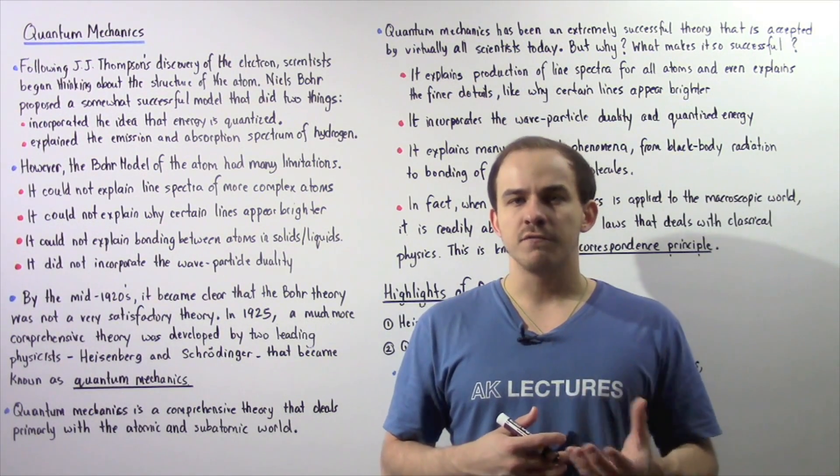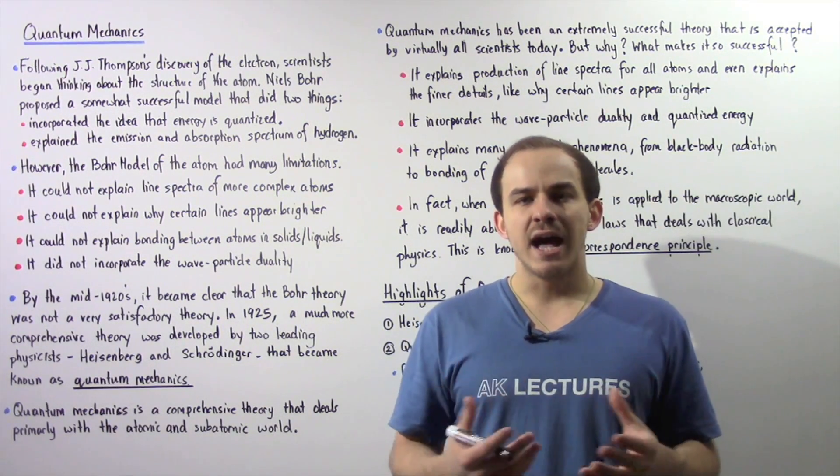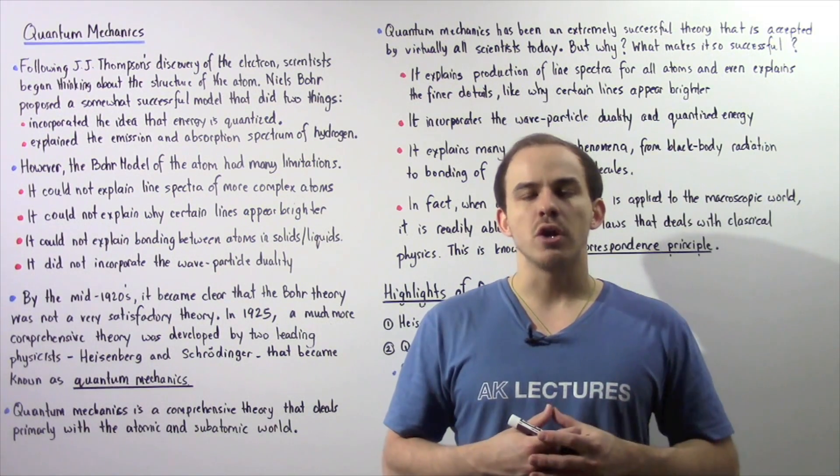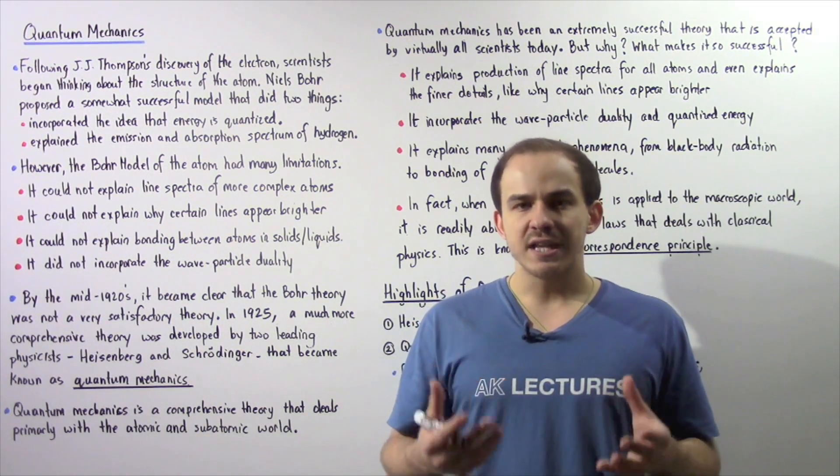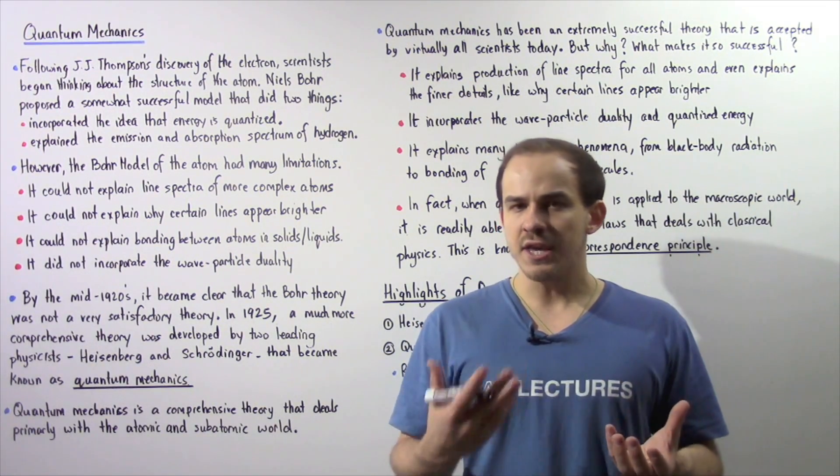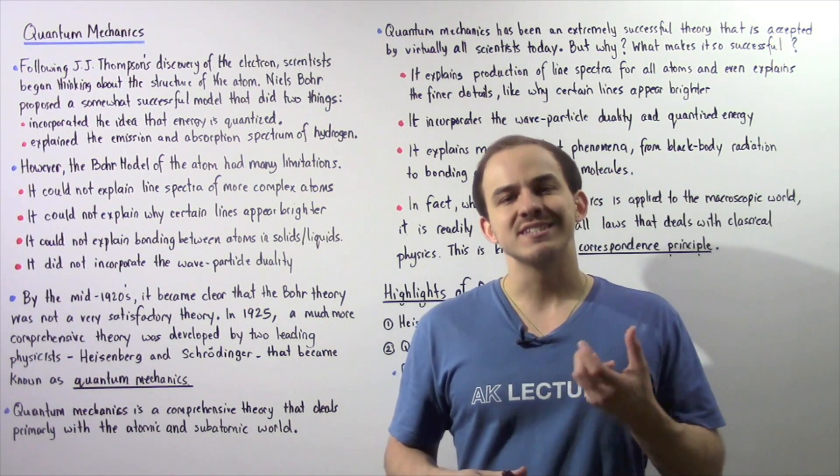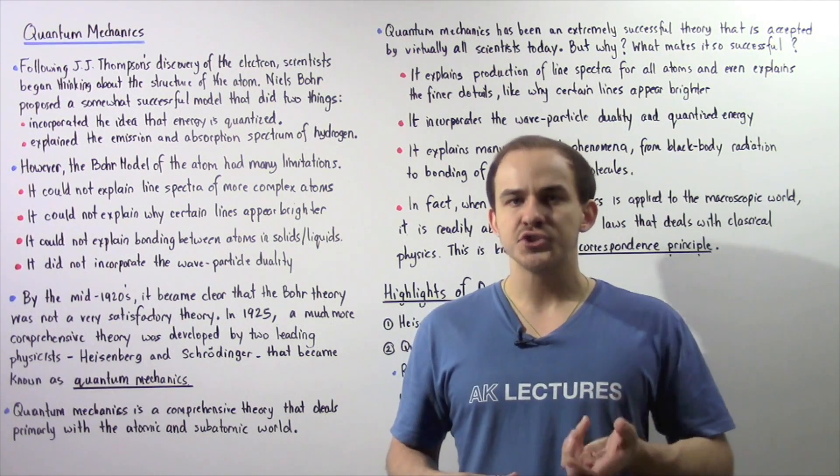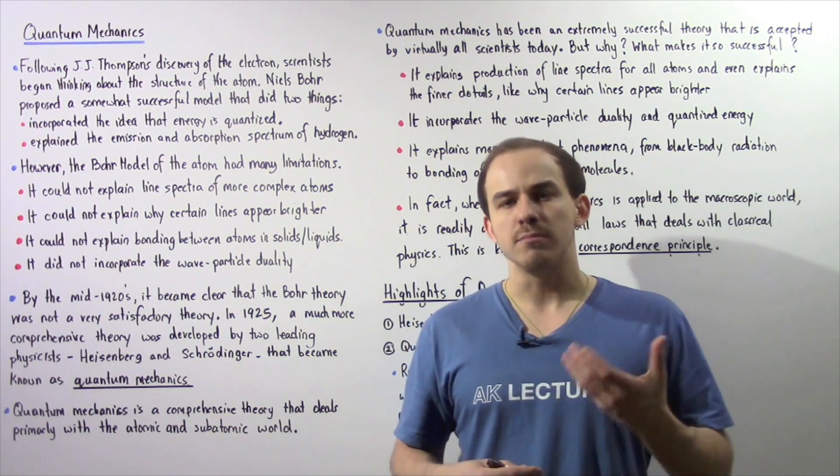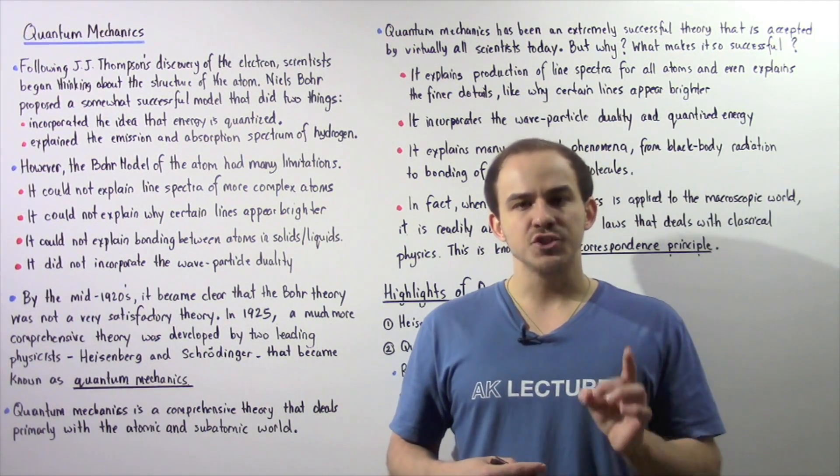Following J.J. Thomson's discovery of the electron, many scientists began to think about the structure of the atom. Different scientists proposed different models and theories that aimed to describe the structure of the atom. One of the more successful theories or models became known as the Bohr model proposed by Niels Bohr.